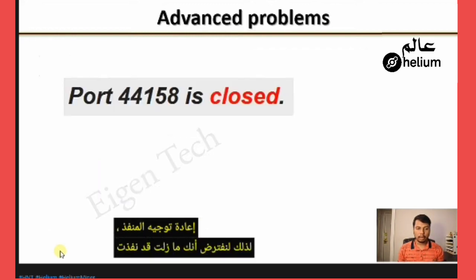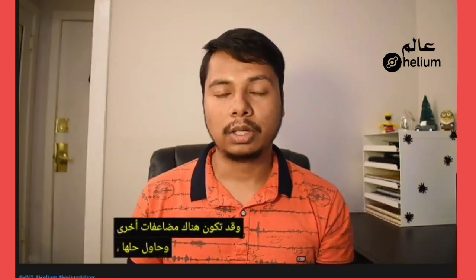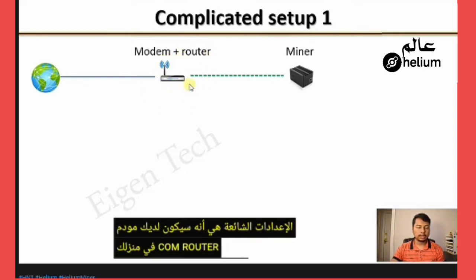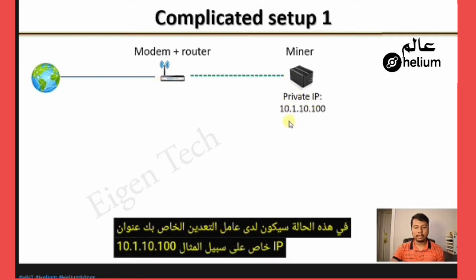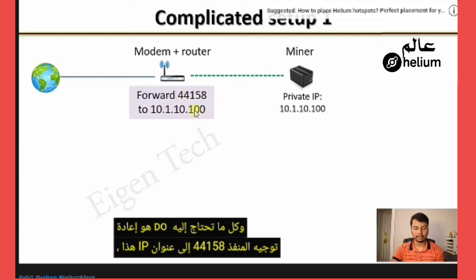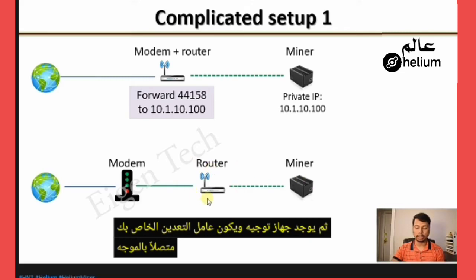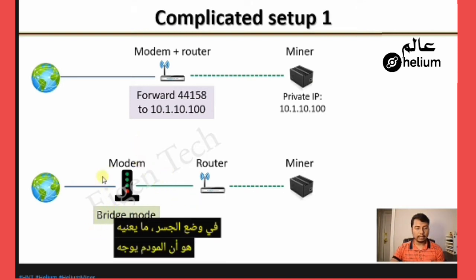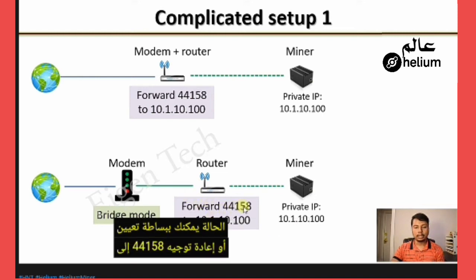If you performed all those steps but your port is still closed, we need to dig deeper. The common setup is a modem-router at your home connected to the internet, with your Helium miner connected to it. Your miner will have a private IP (e.g., 10.1.10.100) and the modem will have a public IP — you simply forward port 44158 to that private IP. However, if you have a separate modem connected to the ISP and then a router, you should put the modem into bridge mode so the router gets a public IP, then forward port 44158 to the miner's private IP.